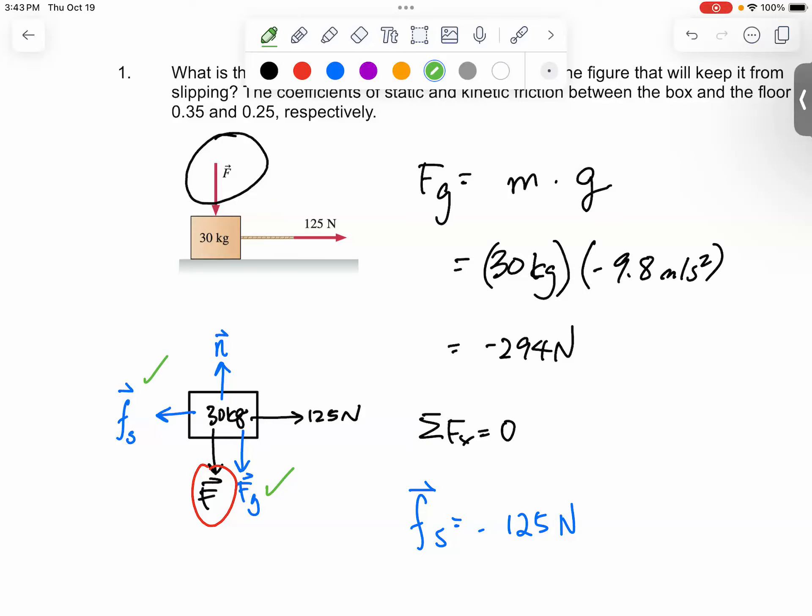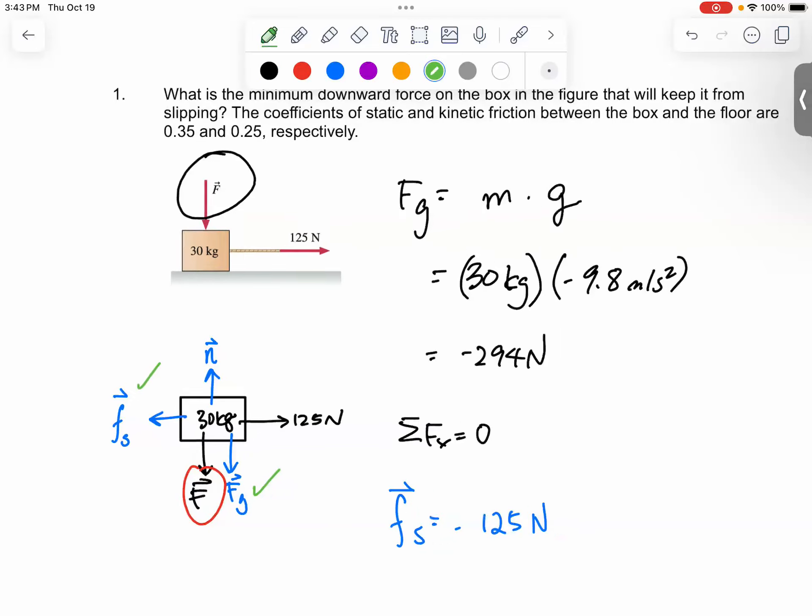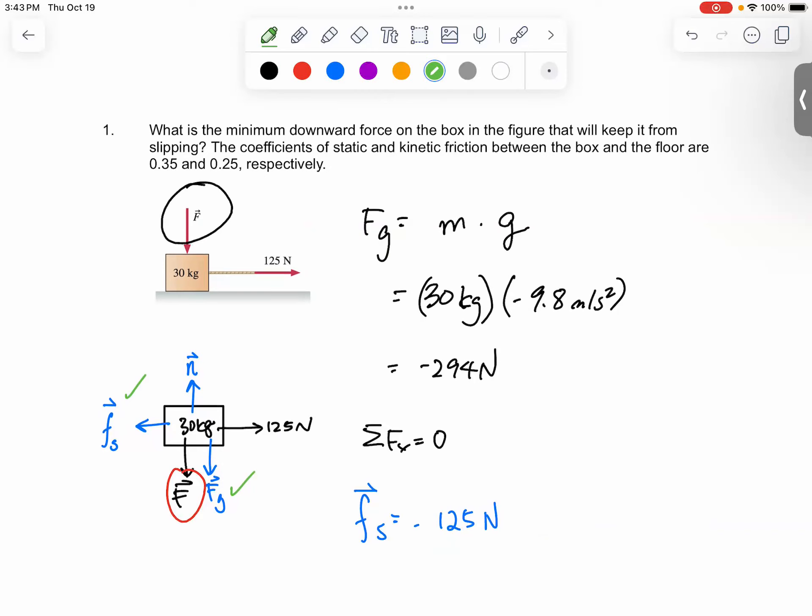All right, so far so good. So now, do you think we can get the normal force? If somebody says, 'oh, normal force is easy. Normal force is just, wait, hold on, that's the 294 newtons.' Would you say, 'yeah, that's correct,' or would you say, 'wait, hold on, that is not true?'